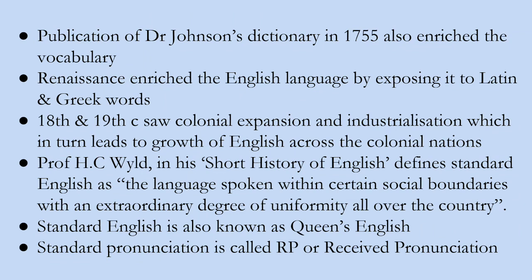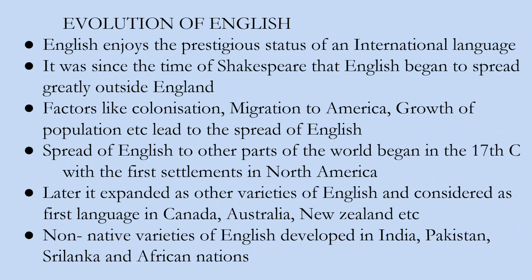This was the trajectory of the development of English as a standard language. Now let us look into how this language evolved into a global language. English enjoys a prestigious position as an international language now, but this is a relatively recent development — English was unknown to the rest of the world outside England almost until the 17th century. It was since the time of Shakespeare that English began to spread greatly outside England. Various factors such as colonisation, migration to America, and growth of population led to the spread of English.